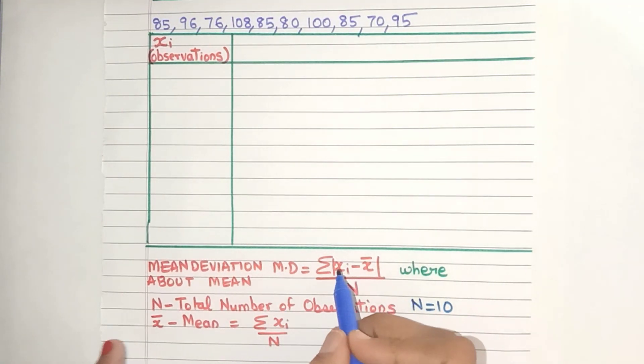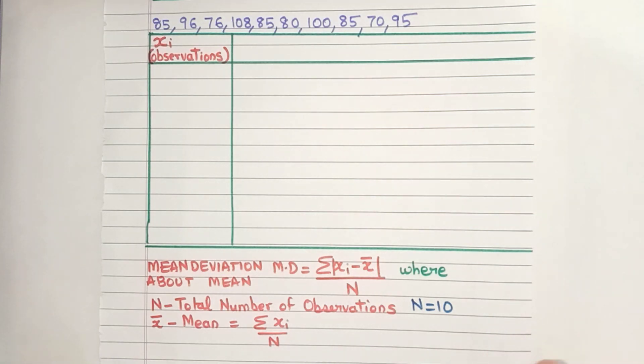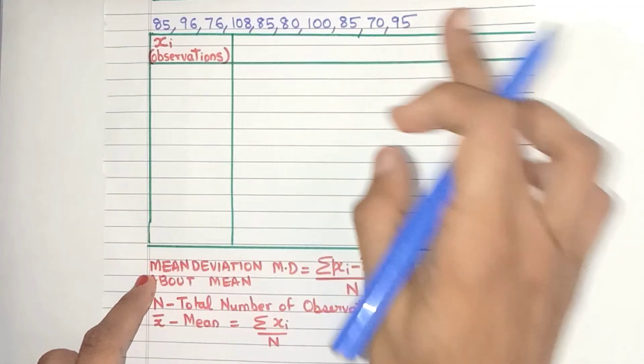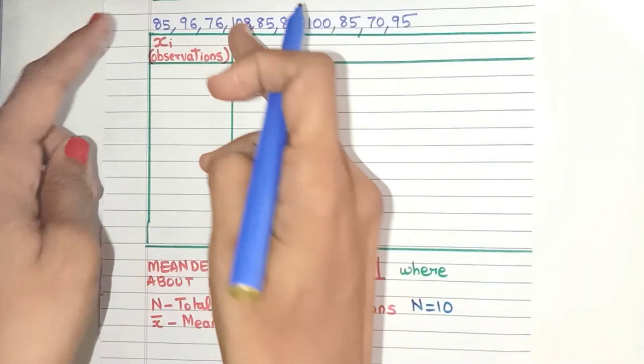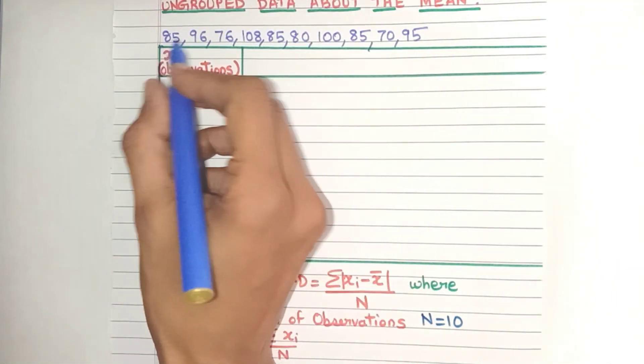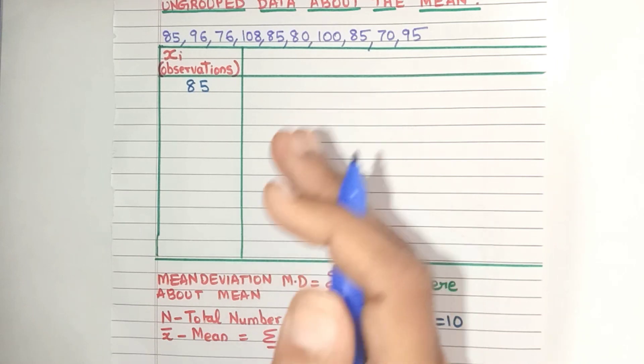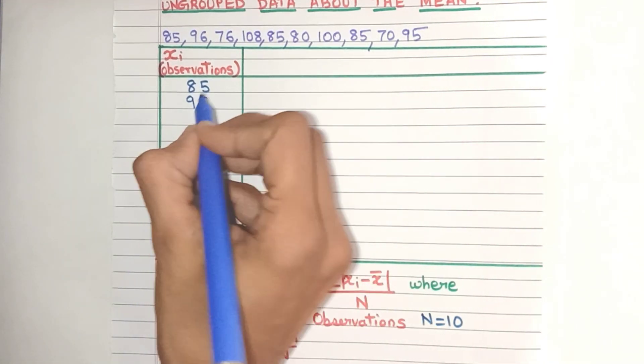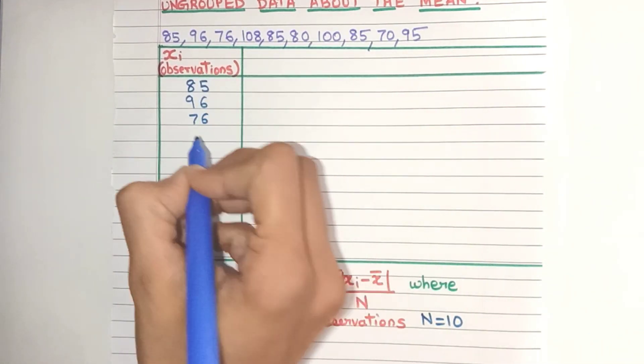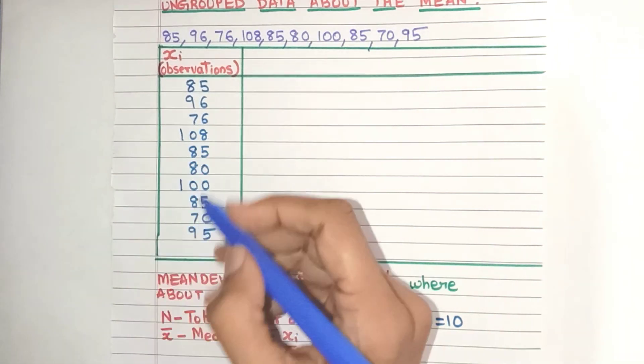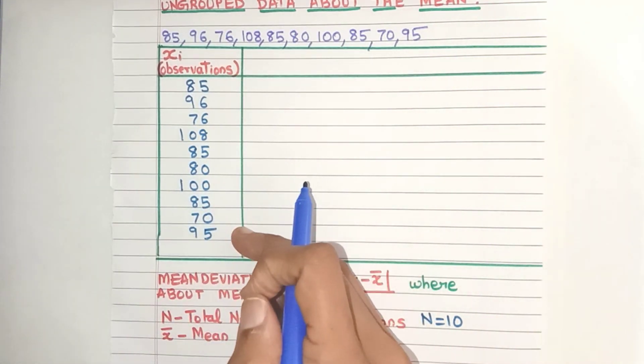Next in the formula we have xi. Now what is xi? Yes, xi are these observations. So let's write them in this column. Whenever we write the data in column form, it's always easier to understand and we make fewer mistakes also. Just take care while copying the data. Write the digits one below the other. So here we have all the xi values.